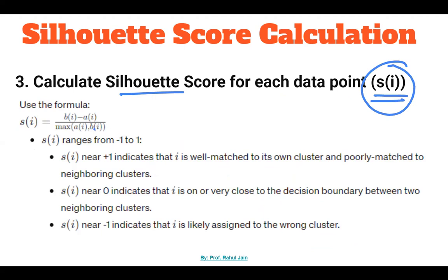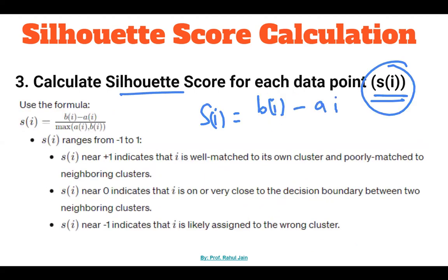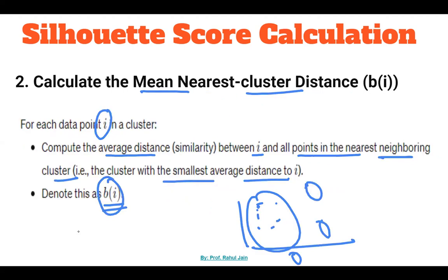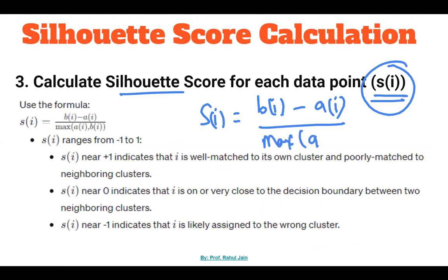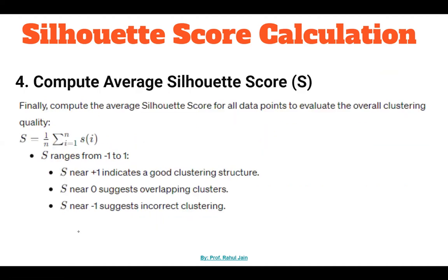Thereafter, we calculate the silhouette score for each data point, s(i). The formula is: s(i) = [b(i) − a(i)] / max(a(i), b(i)). The silhouette score ranges from −1 to +1. s(i) near +1 indicates the point is well matched to its own cluster and poorly matched to neighboring clusters. s(i) near 0 indicates the point is on the decision boundary between two clusters. s(i) near −1 indicates the point is likely assigned to the wrong cluster.